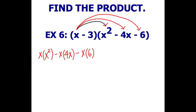Next, with distributive property, you will have to multiply the next term in the binomial, negative 3, with all the terms in the trinomial.